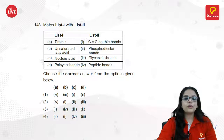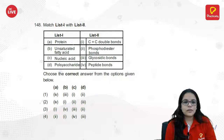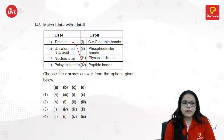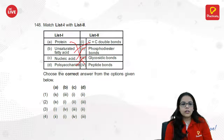Biomolecules and their bonds: proteins are made up of peptide bonds. Nucleic acids have phosphodiester bonds. Polysaccharides have glycosidic bonds. Unsaturated fatty acids have carbon-carbon double bonds. The answer is A4.